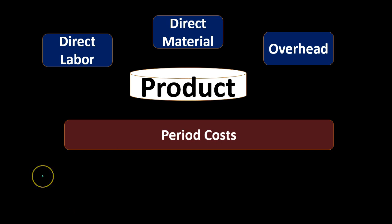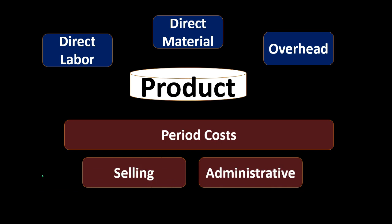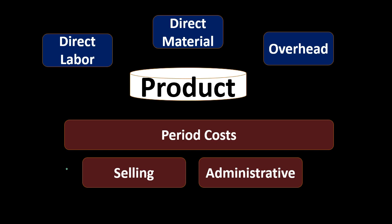Period costs are going to be costs that are not related to the production of the product. They act more like costs in a service type company — costs for a particular time period — and they're typically broken out between selling and administrative. For example, an executive salary, or anything that's not in the warehouse or production area, goes here. For administrative staff or accounting staff, the matching principle allows us to expense it in the period the wages are incurred.